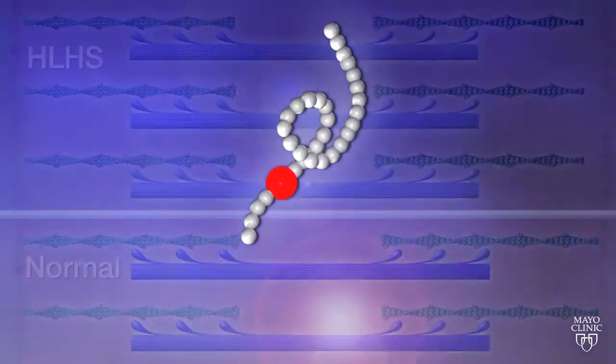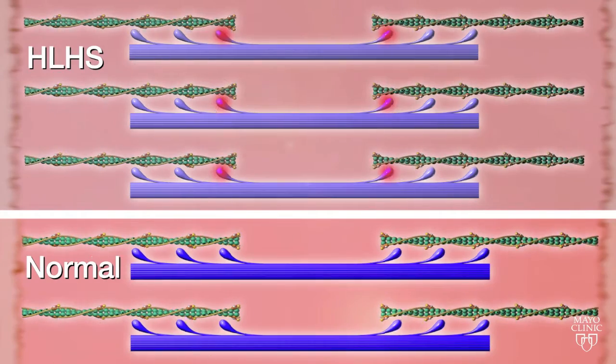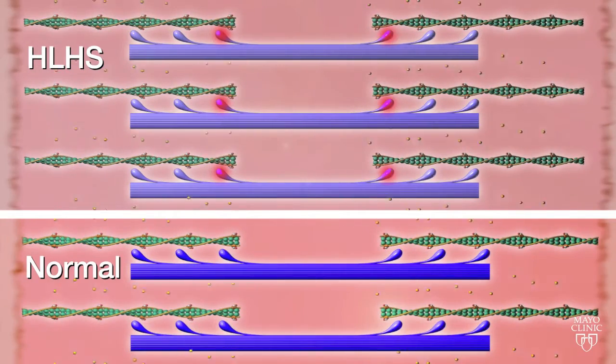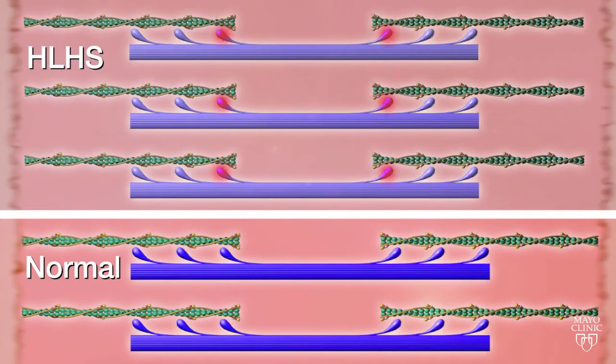In some families, we have identified mutations that affect the sliding filament, a part of the mechanism that makes our heart muscle contract. This filament does not properly function and the heart muscle contracts with less force than unaffected hearts.